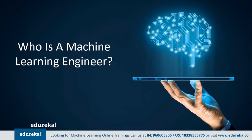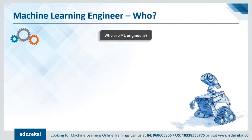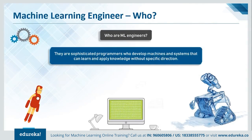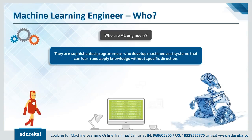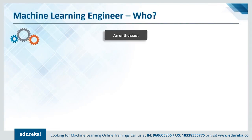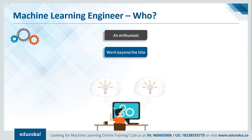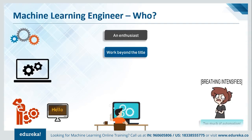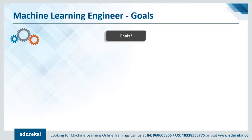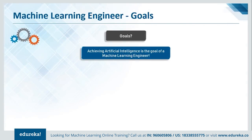Now that we've established a foothold on machine learning, let's understand who a machine learning engineer actually is. Machine learning engineers are sophisticated programmers who develop machines and systems that can learn and apply knowledge without any specific direction. They are enthusiastic computer science programmers whose focus goes beyond programming specific tasks — they create programs that enable machines to take actions without being specifically directed. The goal of a machine learning engineer, to put it in the simplest terms, is to achieve artificial intelligence.